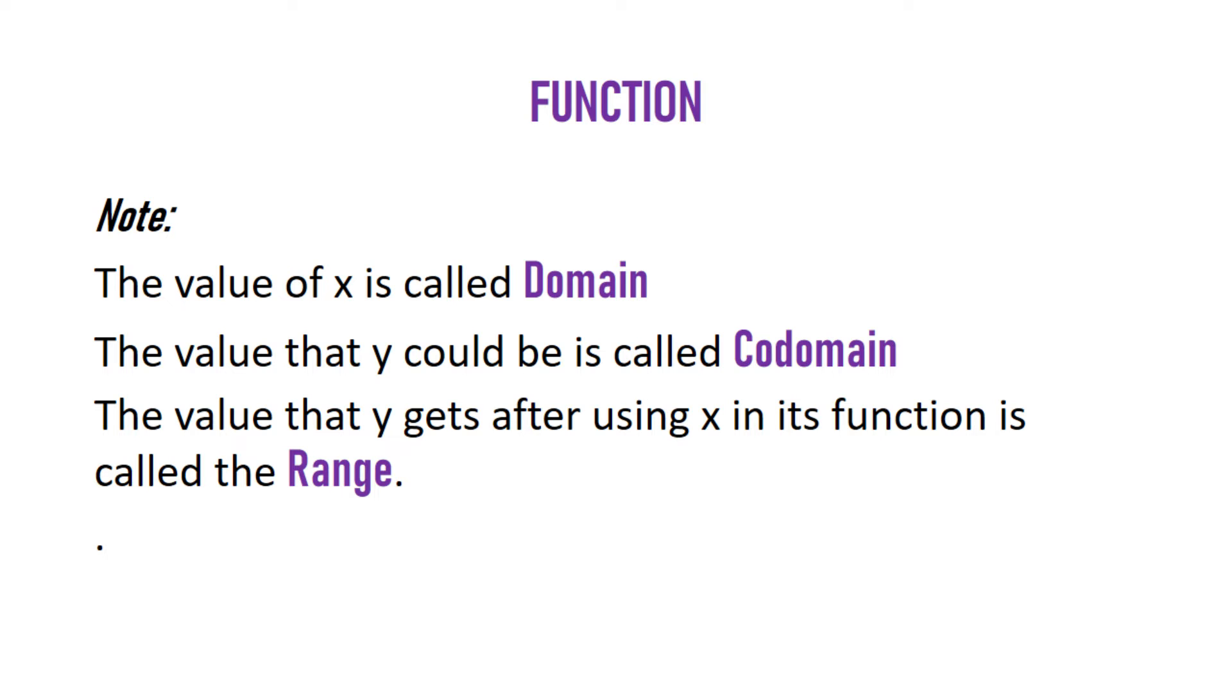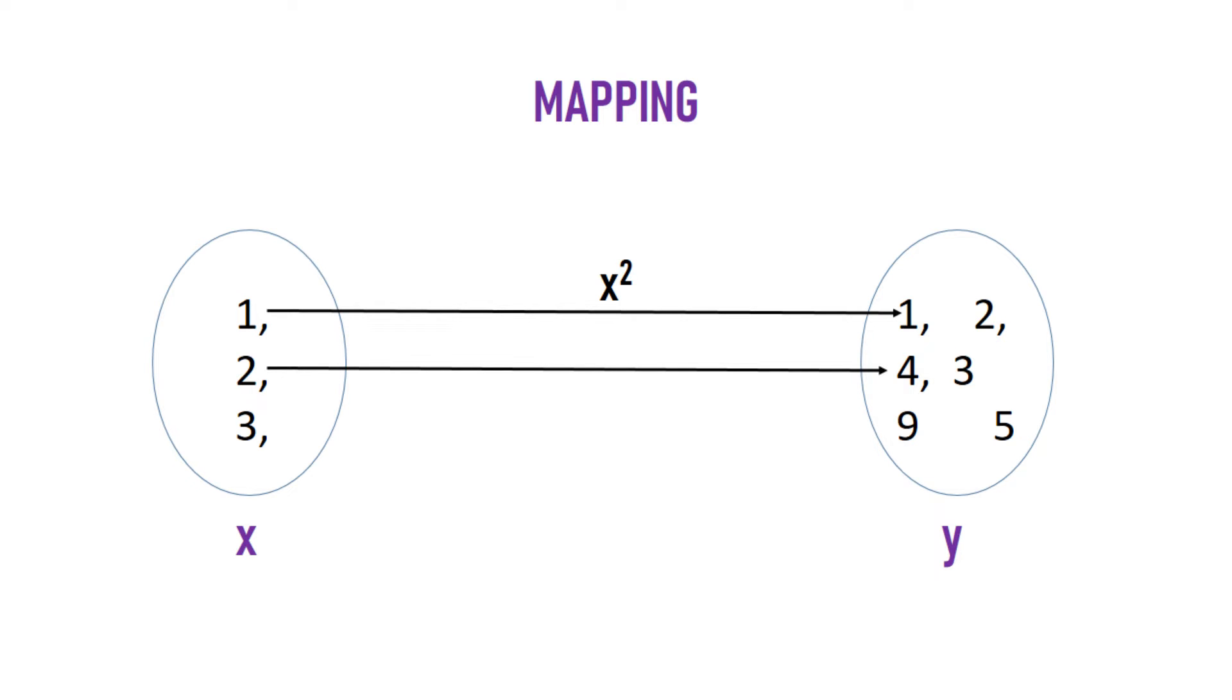Let's visualize this with mapping. This is x and this is y. One from the domain maps to 1 from the range with a function of x squared. The same goes for 2 mapping to 4 and 3 mapping to 9. There can be many values for y called the codomain, but the particular one that associates with the domain is the range. This brings us to types of functions.